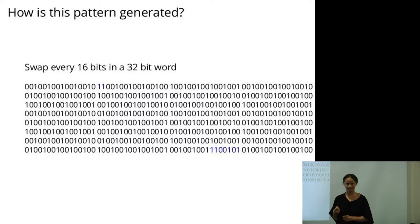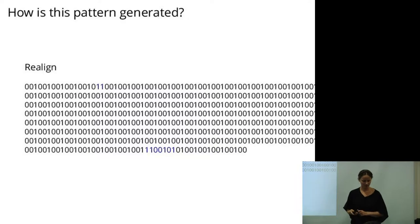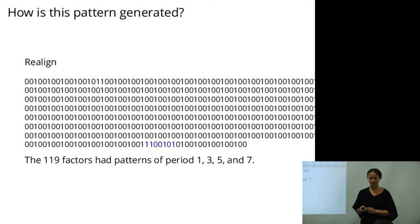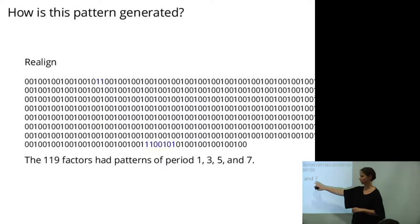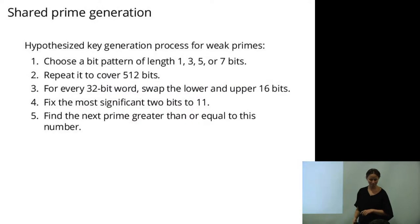If you swap every 16 bits of every 32 and then realign, then it becomes periodic. When we did this to many of the factors found, we found patterns of period 1, 3, 5, and 7. So there's something more going on here.